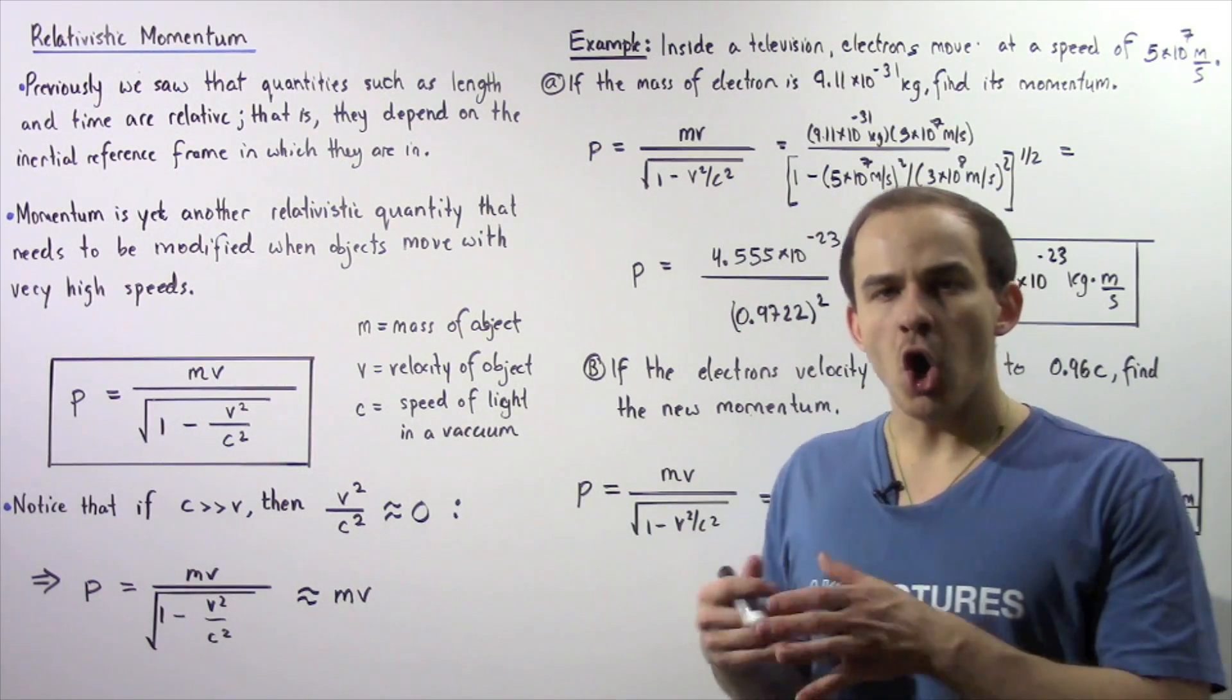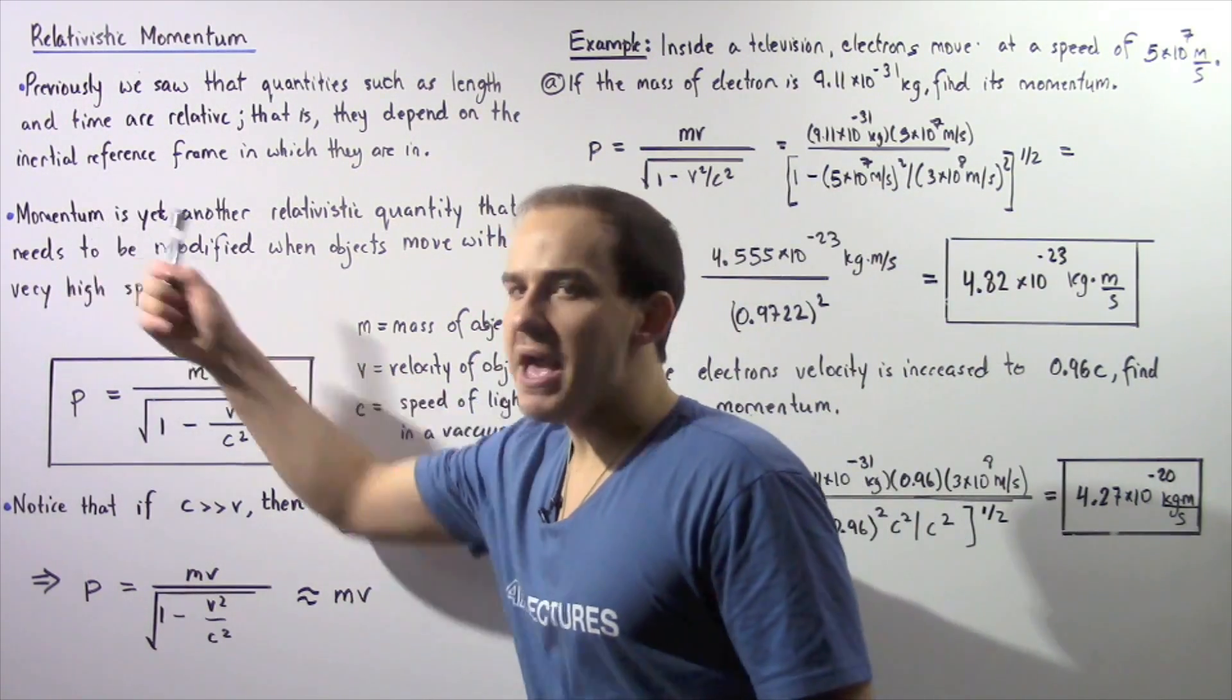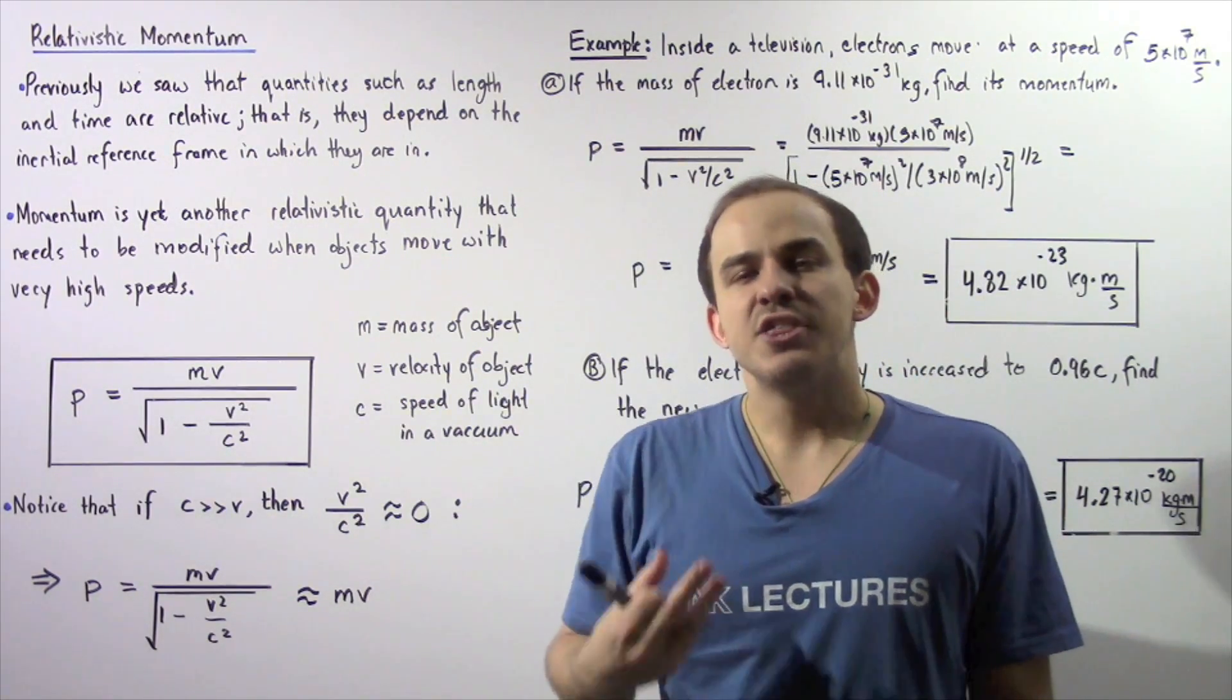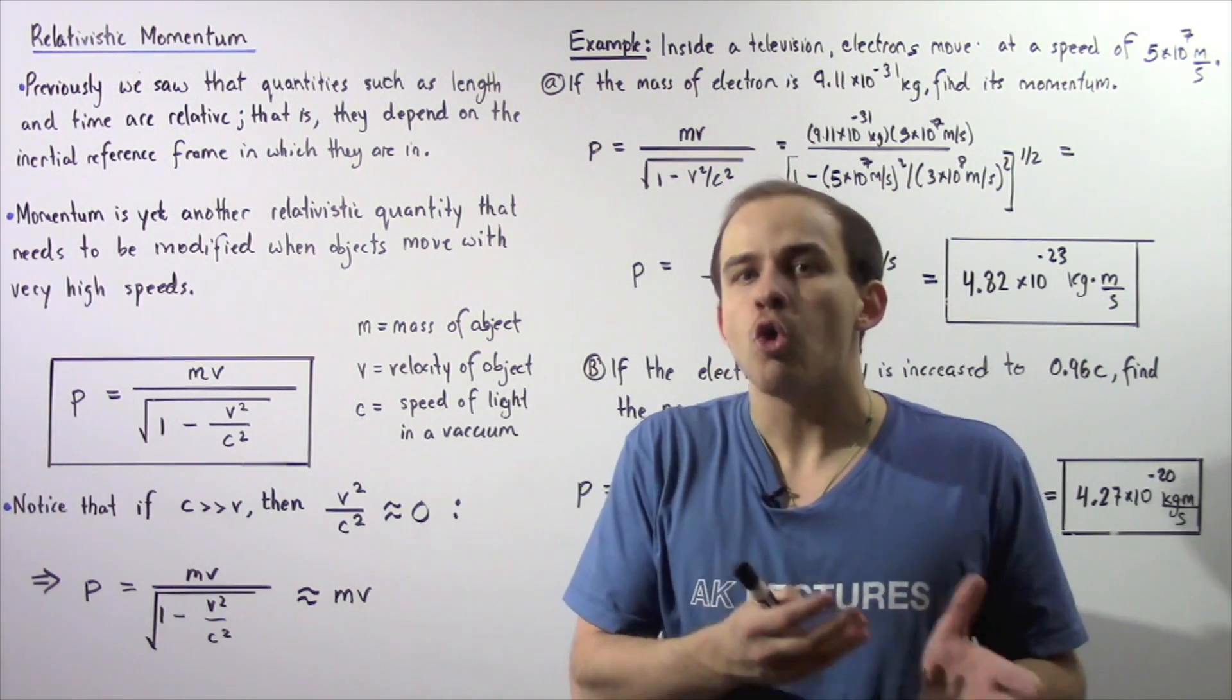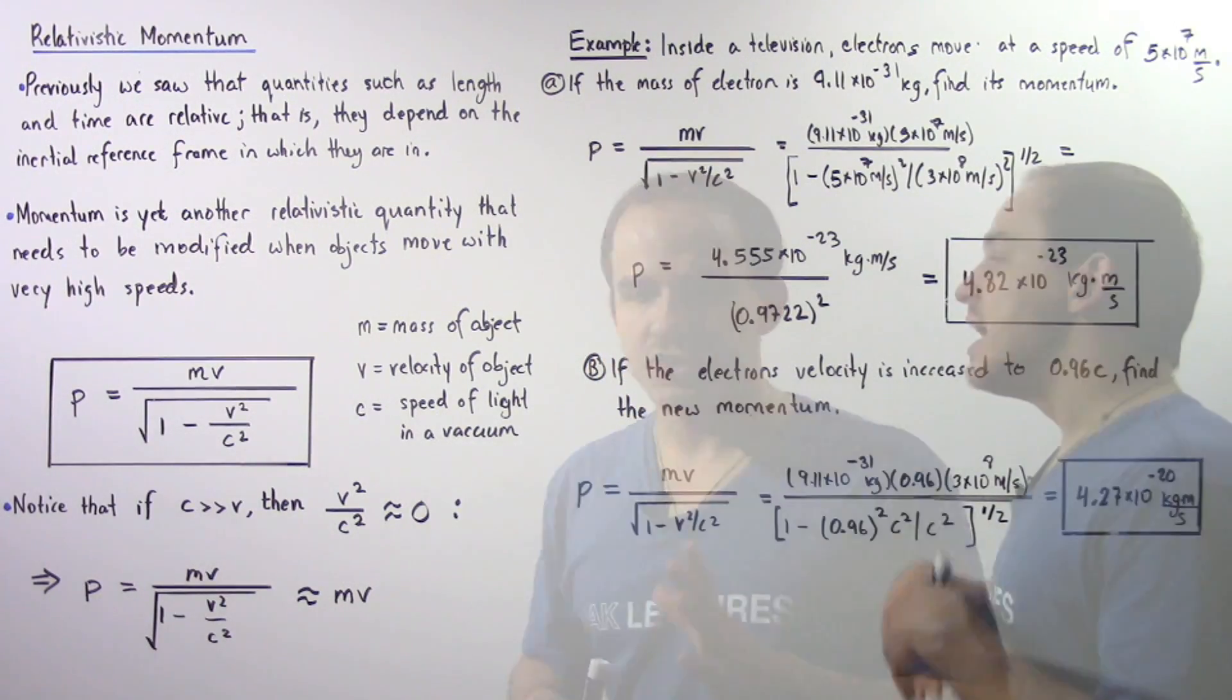These quantities are known as relativistic quantities. Now momentum is yet another relativistic quantity that needs to be modified when we are discussing objects or reference frames that are moving with very high velocities.